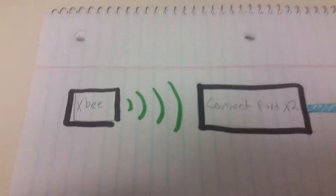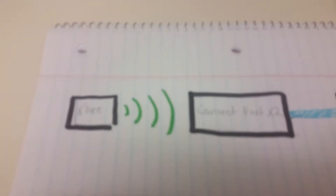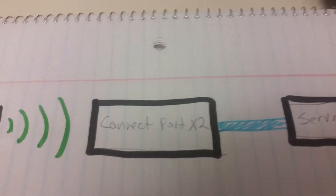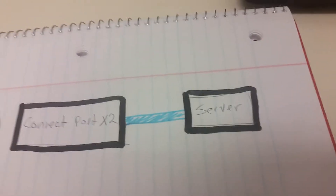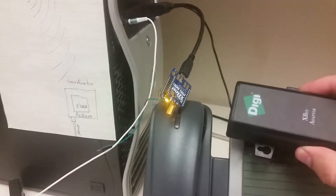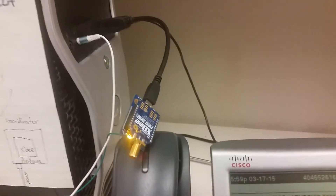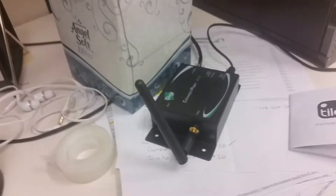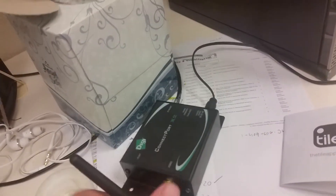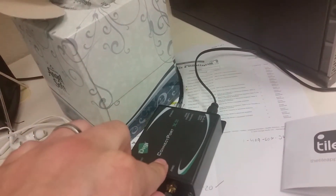We're going to demonstrate how an XB will send data wirelessly to a Connect Port X2 which is communicating with a server. We're going to do this with the XB out of its shell. It's usually sitting in the shell, but we have taken it out to connect it to the computer so we can send dummy data. This XB is going to send dummy data from here to Connect Port over here, which is connected through ethernet through our network.